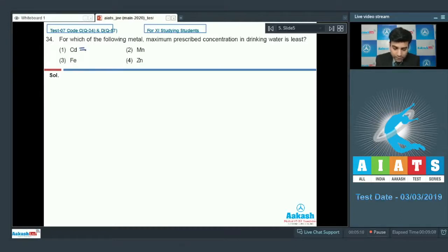If I talk about cadmium, the maximum prescribed concentration is 0.005 ppm. For manganese it is equals to 0.05 ppm. For iron it is 0.2 ppm and for zinc it is 5 ppm. So least value is for cadmium. Hence the correct answer for this question is option 1.